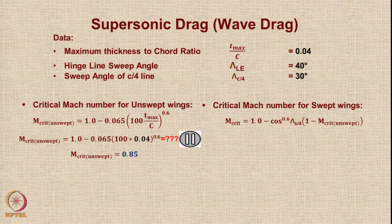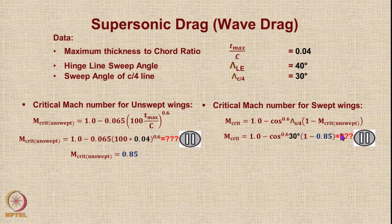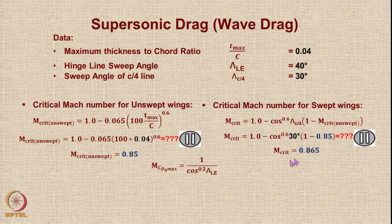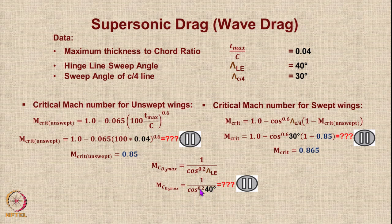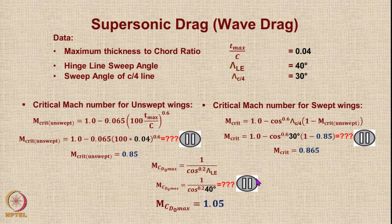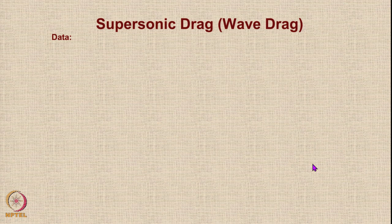The maximum Mach number for cruise may not be of much daily use. M_CDO_max = 1 / cos^0.2(lambda_LE) = 1 / cos^0.2(40°) ≈ 1.05. So the maximum drag occurs at Mach 1.05 and then falls down again.